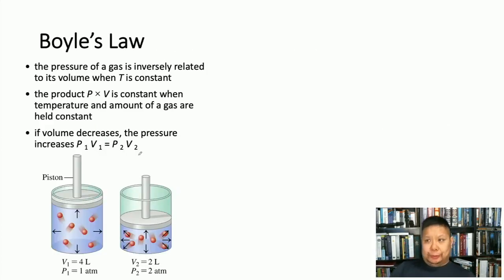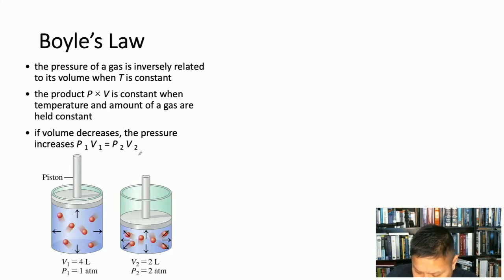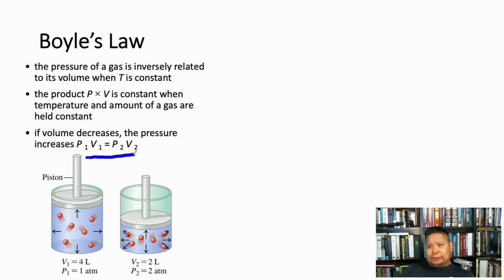There are several gas laws to learn before studying gases. The first is Boyle's Law, which states that when temperature and amount of gas are constant, pressure and volume are inversely related. If volume decreases, pressure increases, giving the formula P1V1 = P2V2, where initial pressure times initial volume equals final pressure times final volume.